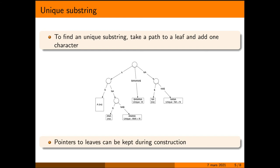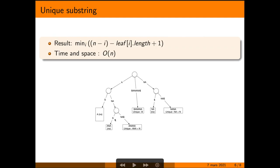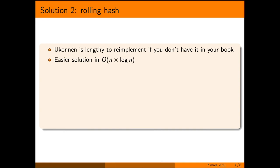Pointers to leaves can be kept during construction to avoid having to go through the tree once it is built. So you go through all the leaves and for those who have a last edge where you can add one character, you just compute the length of the unique substring by subtracting the length of the last edge from N and you take the minimum. Now a Ukkonen is lengthy to reimplement if you don't have it in your book.